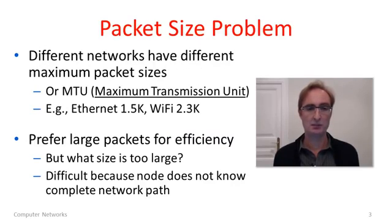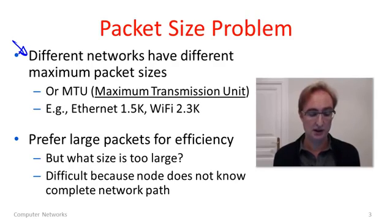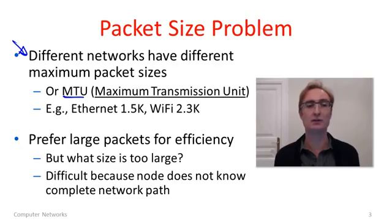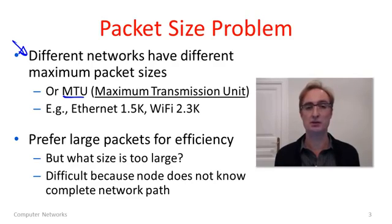Let's recap the problem before we dive into the details of the solution. The problem in a nutshell is that different networks have different maximum packet sizes. You'll often see this referred to as an MTU, or maximum transmission unit — the largest packet which will fit through a network. It'd be wonderful if we could mandate one single maximum packet size, but this is never going to happen. All sorts of different network technologies have different maximum transmission unit sizes.